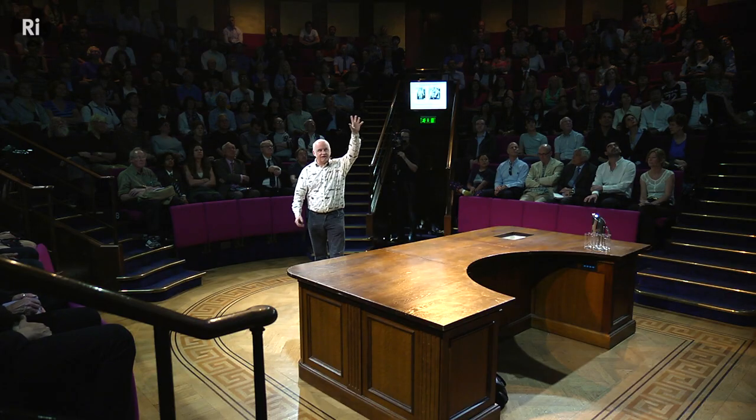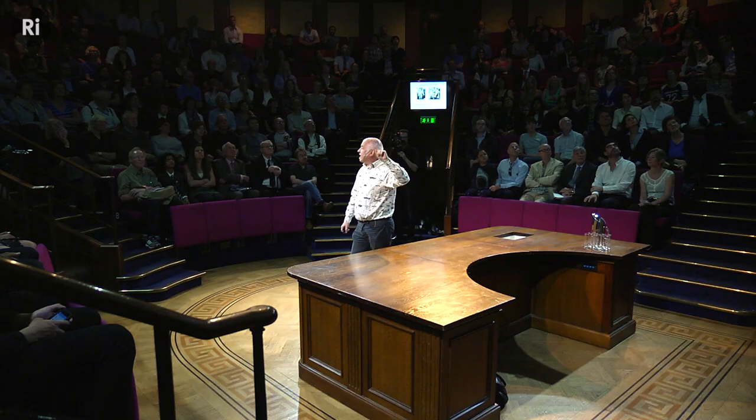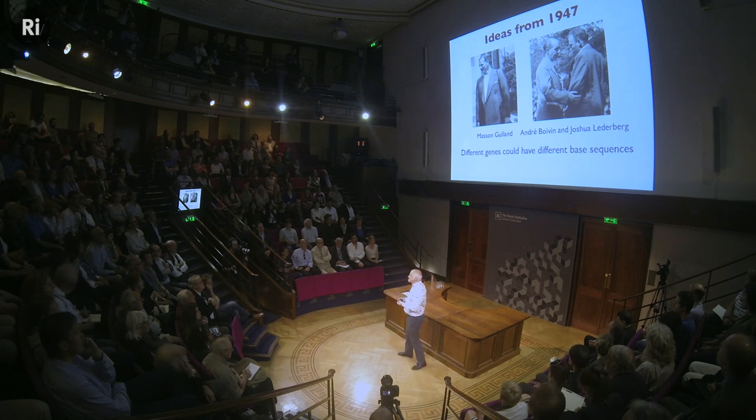As soon as Avery's results were known in 1944, some people did immediately accept his ideas. Joshua Lederberg in particular was a 19-year-old who read the paper and immediately decided this is what he wanted to do. He abandoned medicine, turned to bacterial genetics, and within 15 years he'd won the Nobel Prize. Masson Gulland was a DNA chemist from the UK, and André Boivin was a French scientist who replicated Avery's results on other bacteria. In 1947, at a meeting in Cold Spring Harbor, all three suggested that maybe DNA's not so boring — maybe it's something to do with the order in which those bases A, C, T, and G are presented. The idea that the sequence was significant was already in the air long before Watson and Crick.